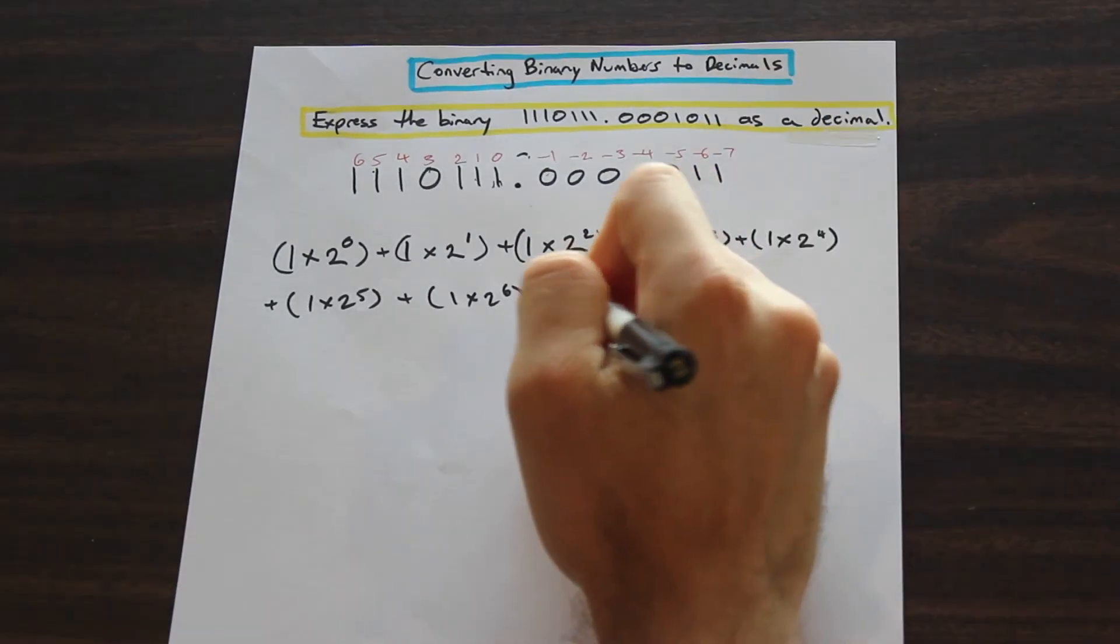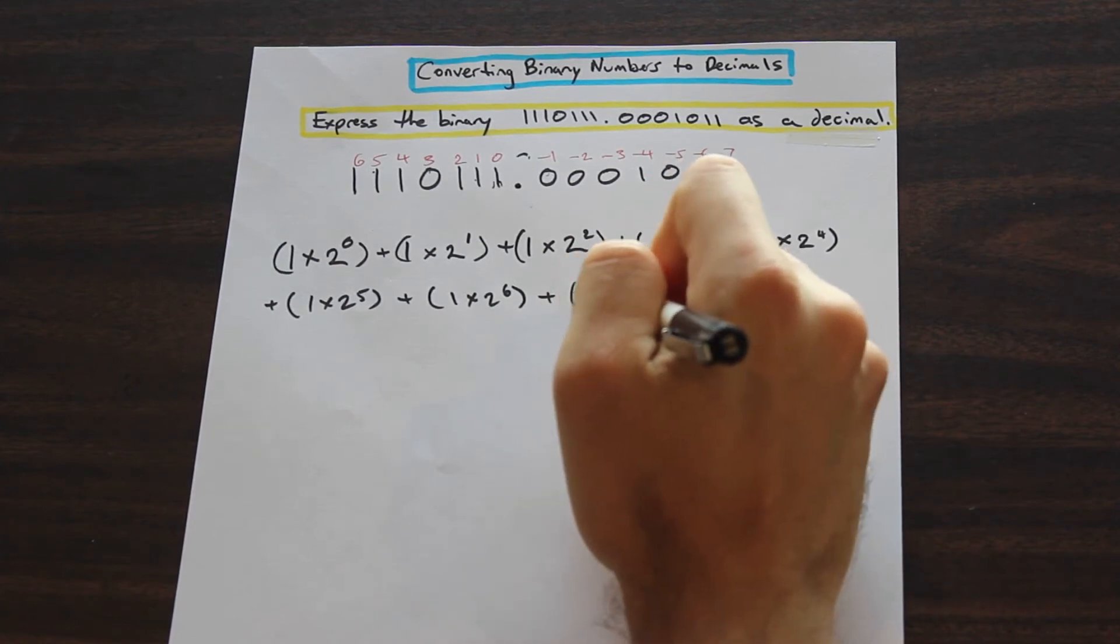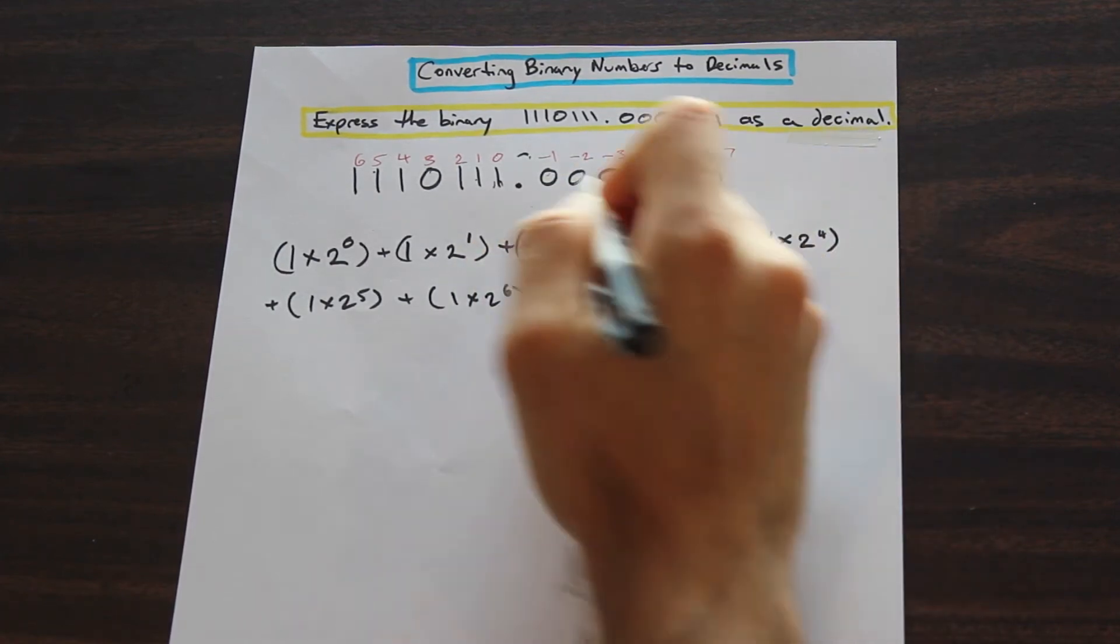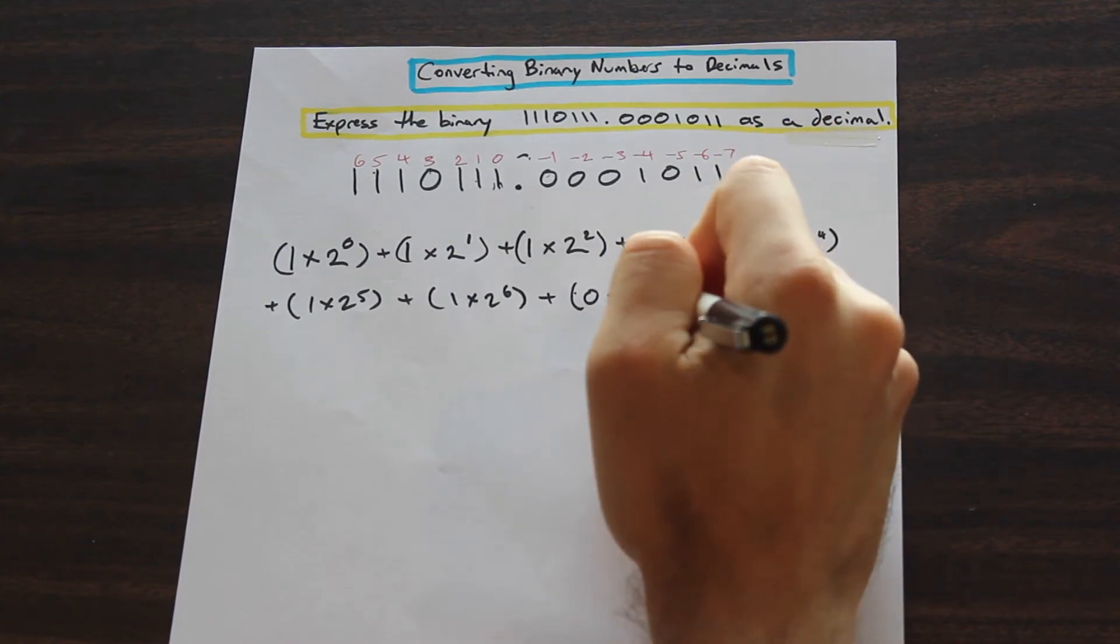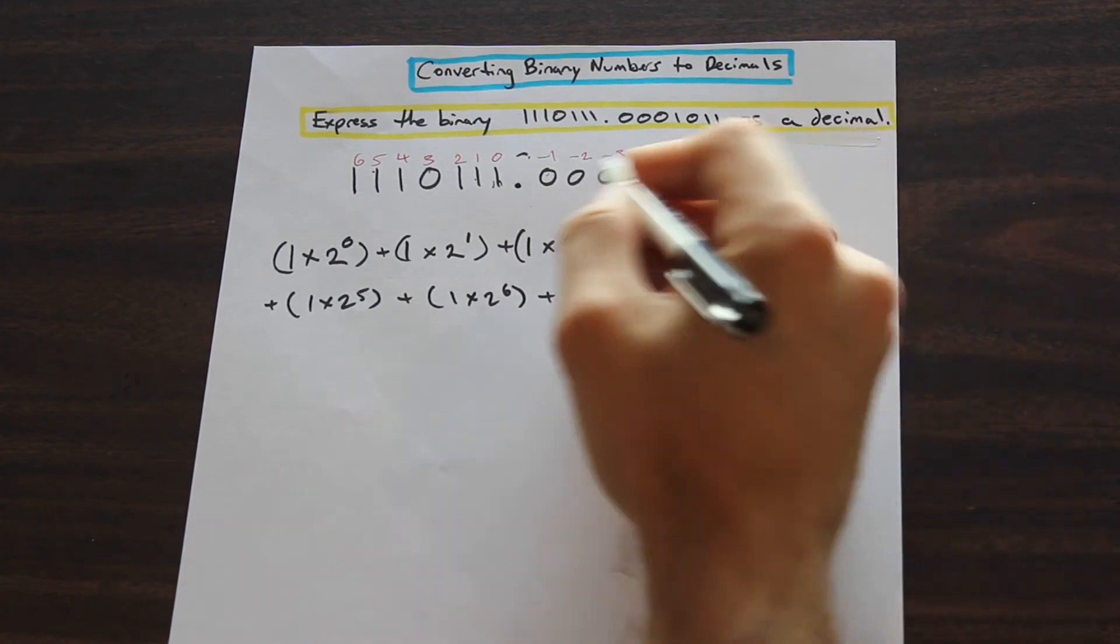And it is going to be exactly the same process. We're just going to add these together and we are going to say that we have the first number here that we're going to put down first and we're going to multiply this times 2 to the power of whatever is in red. And we're just going to go ahead and we're going to do that plus we're going to do that for all the numbers.